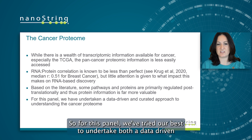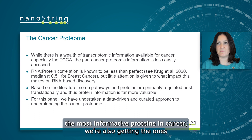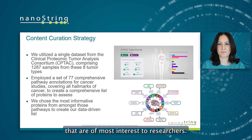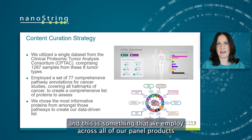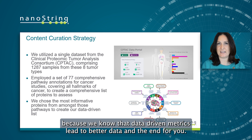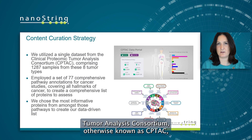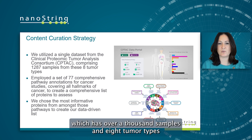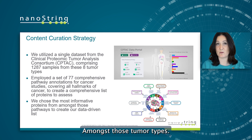For this panel, we've tried our best to undertake both a data-driven and a curated approach to make sure that not only are we getting the most informative proteins in cancer, we're also getting the ones that are of most interest to researchers. We utilized a single data set from the Clinical Proteomic Tumor Analysis Consortium, otherwise known as CPTAC, which has over a thousand samples and eight tumor types with a broad array of sample considerations amongst those tumor types.